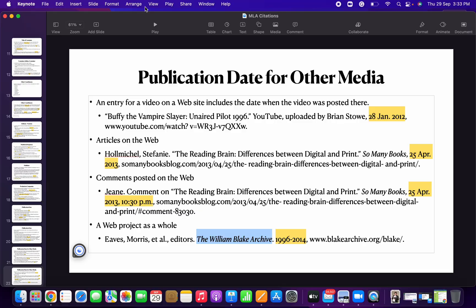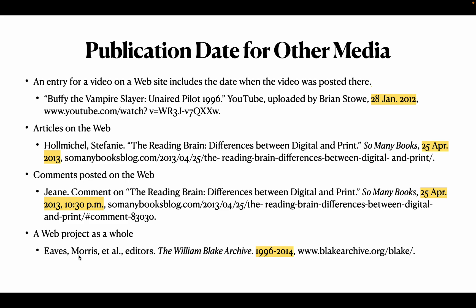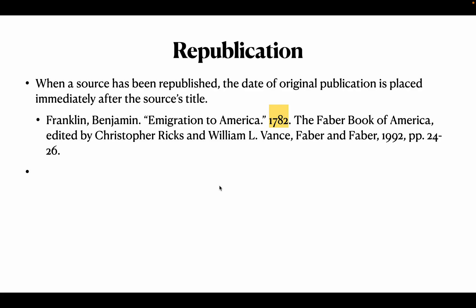You can also cite a website project as a whole. Cite the editor's name, then the website, then the year throughout which the web project was made — for example, 1996–2014.